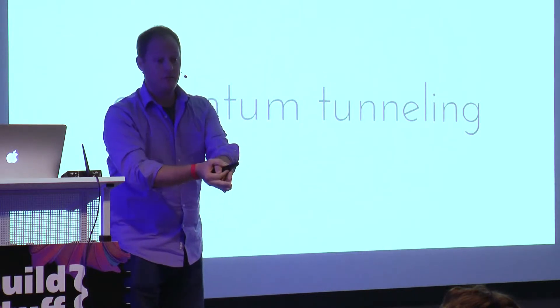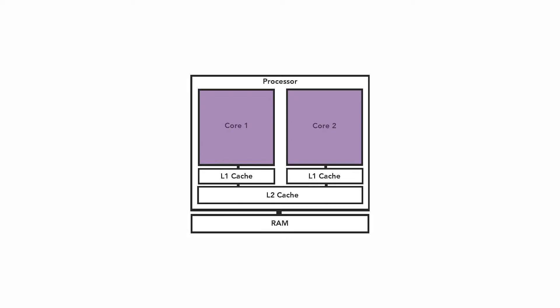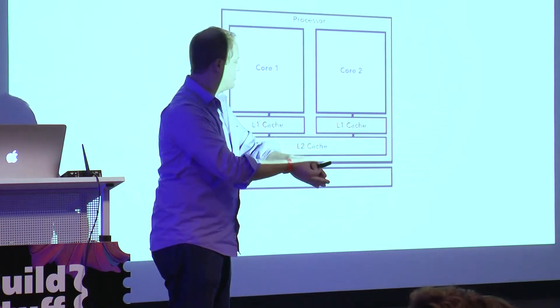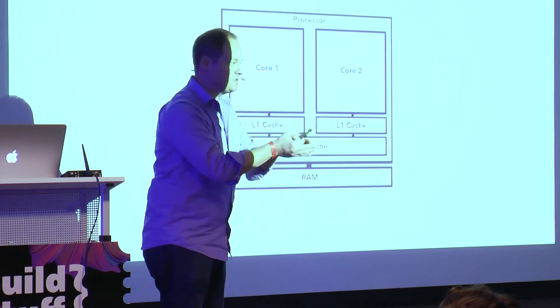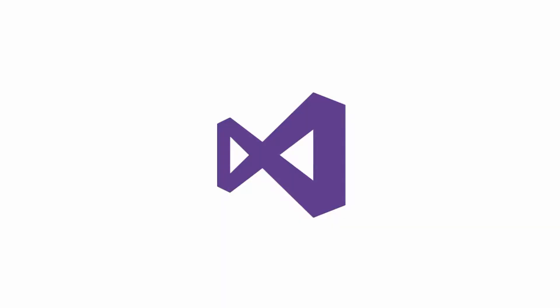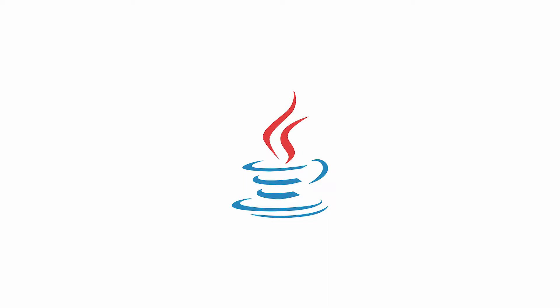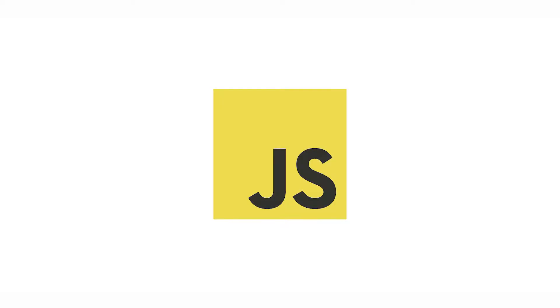So what do we start doing? More cores. That lets us build faster applications, harness the technology we have, and increase computational power. If you're a .NET developer or a Java developer, that's wonderful because we have tasks and threading. But what about JavaScript?